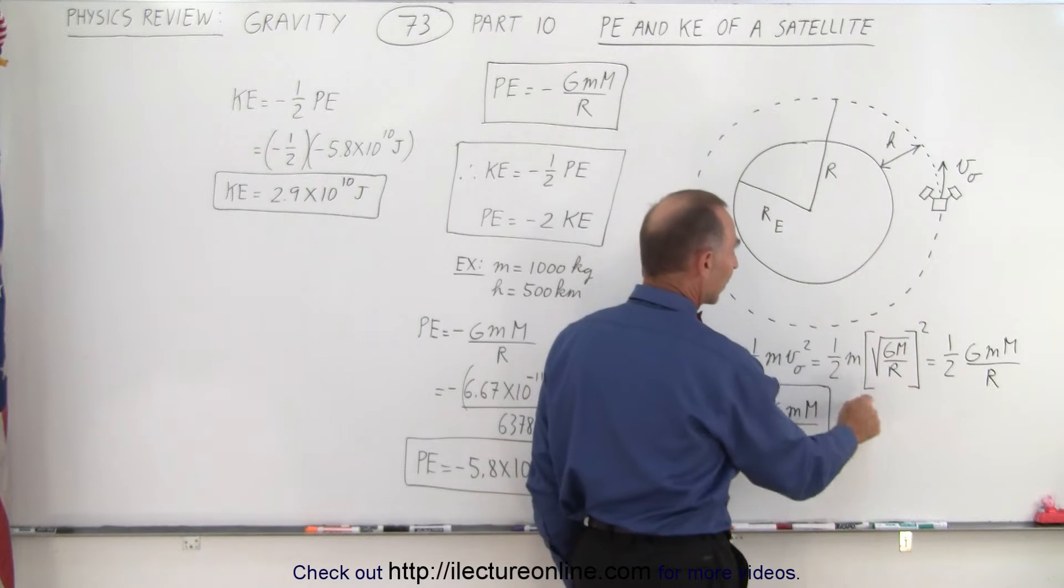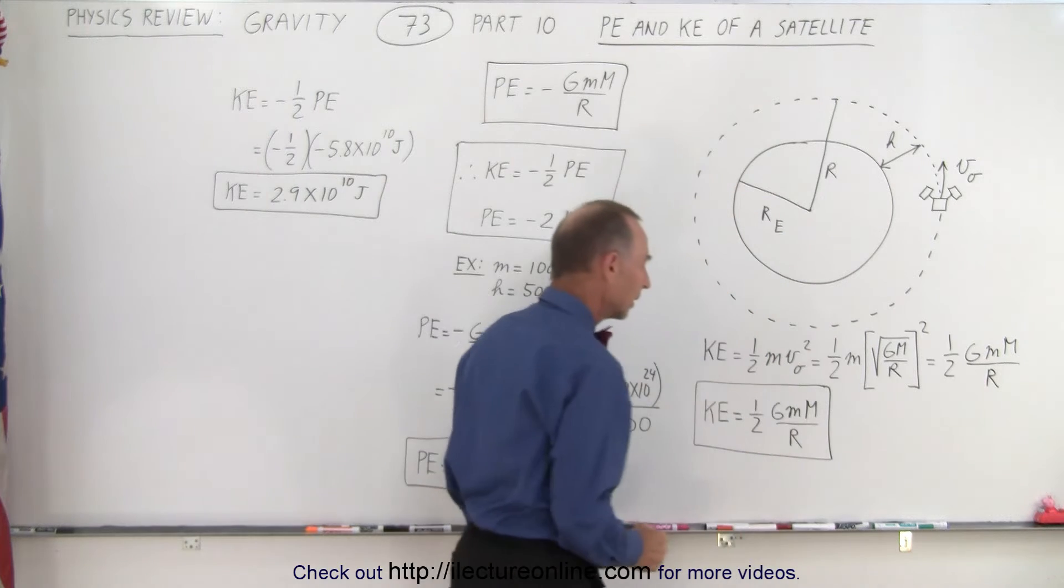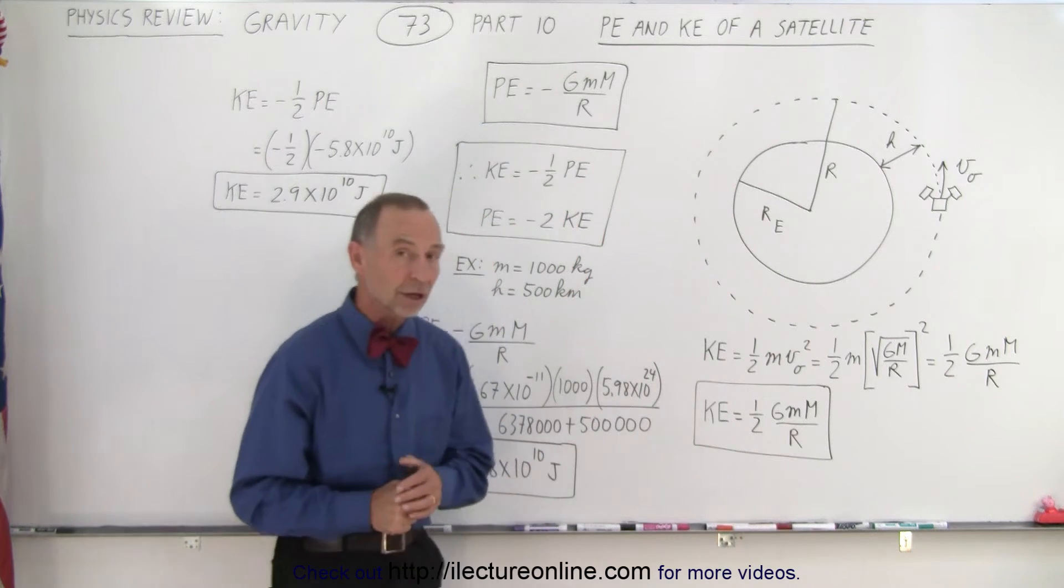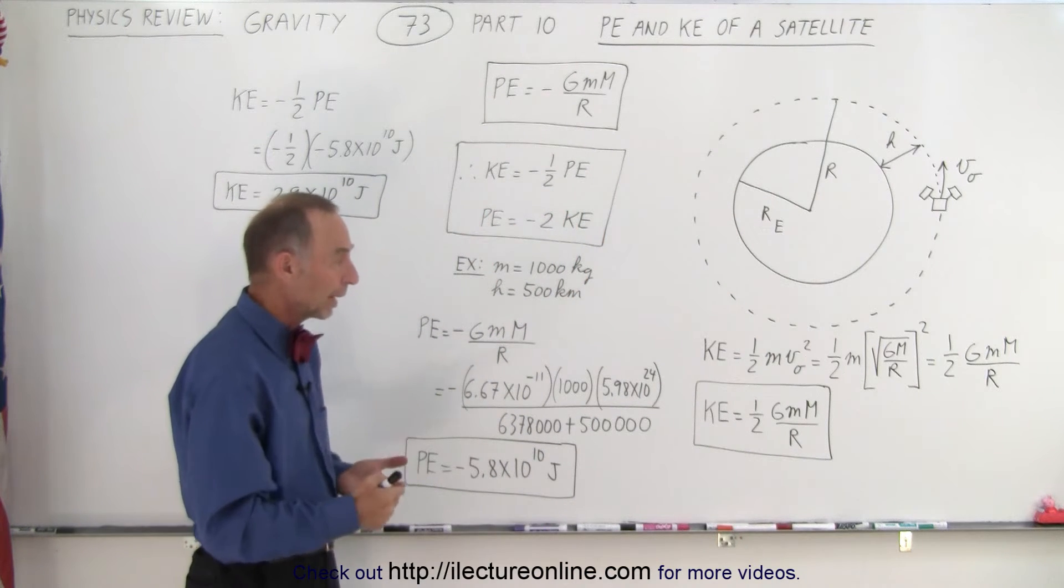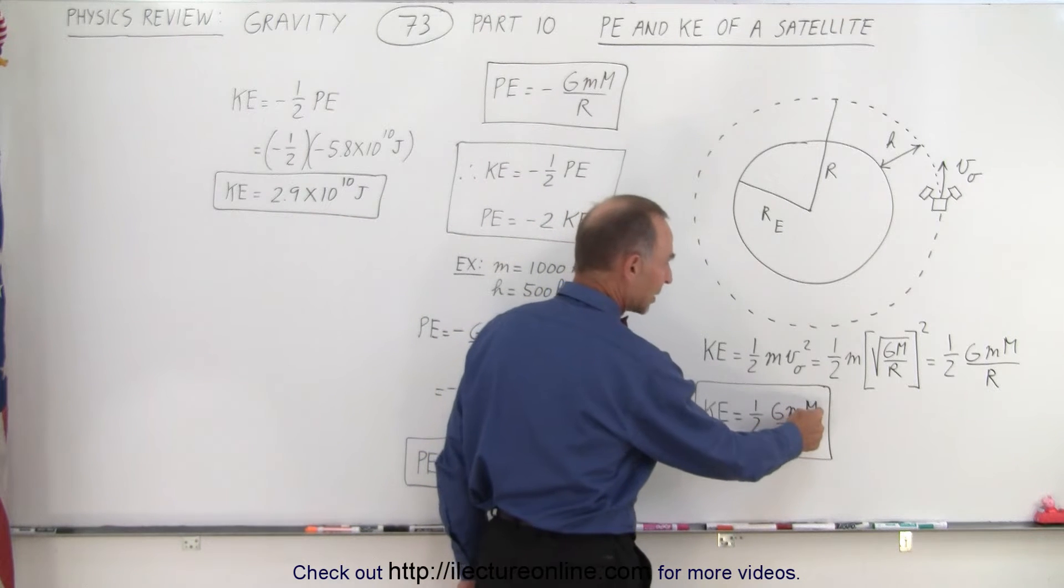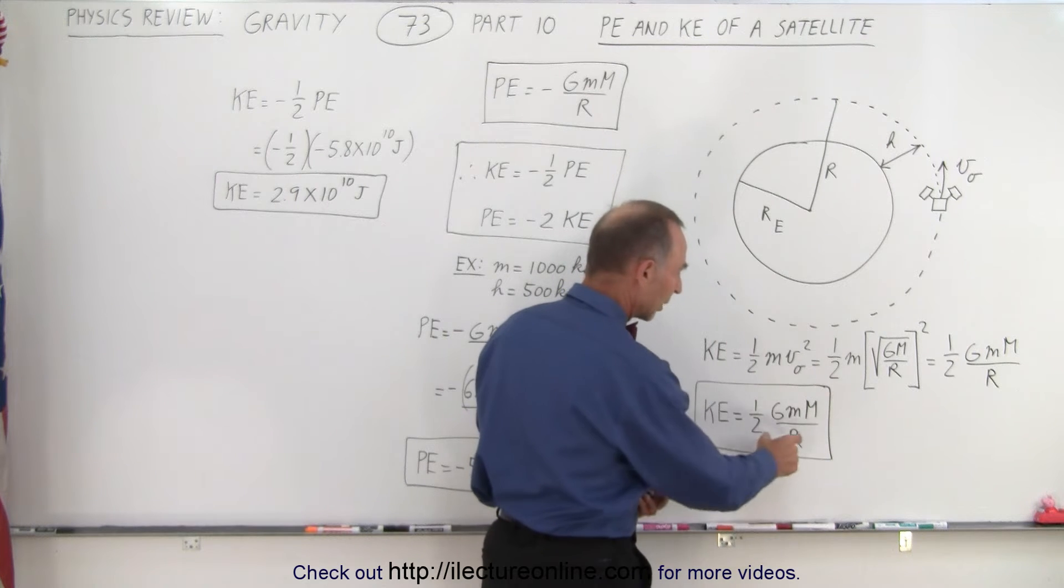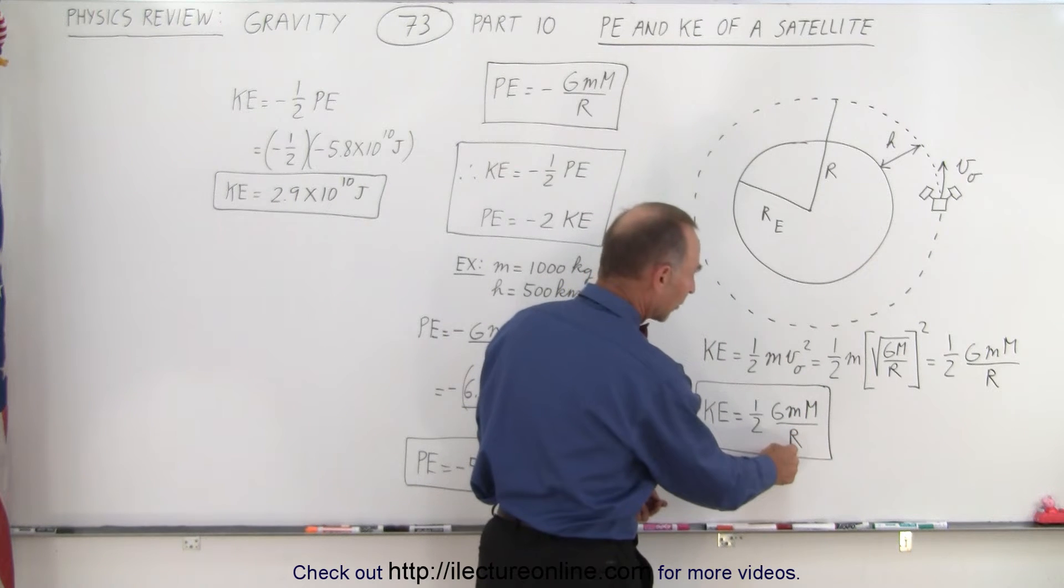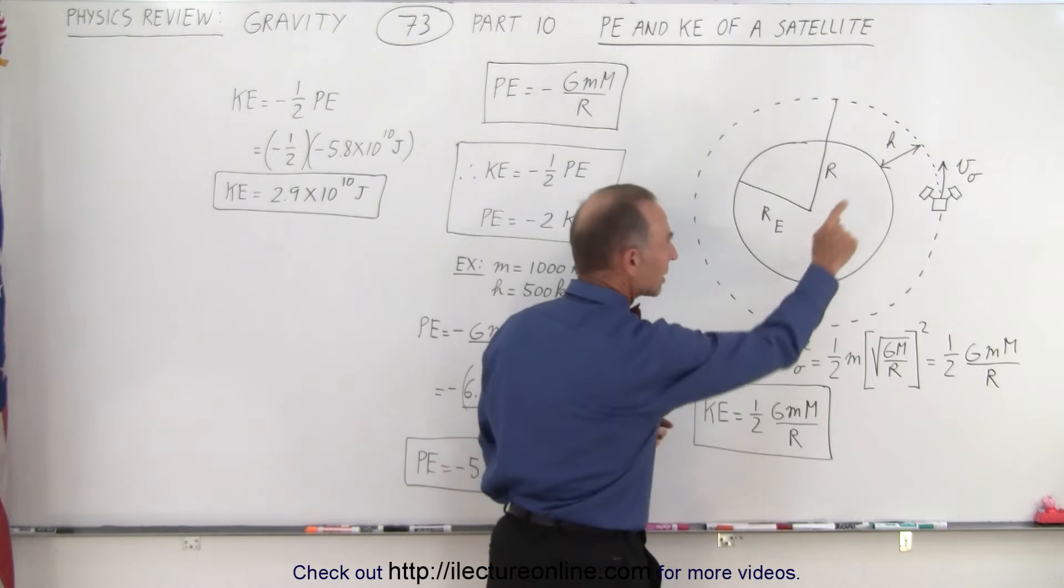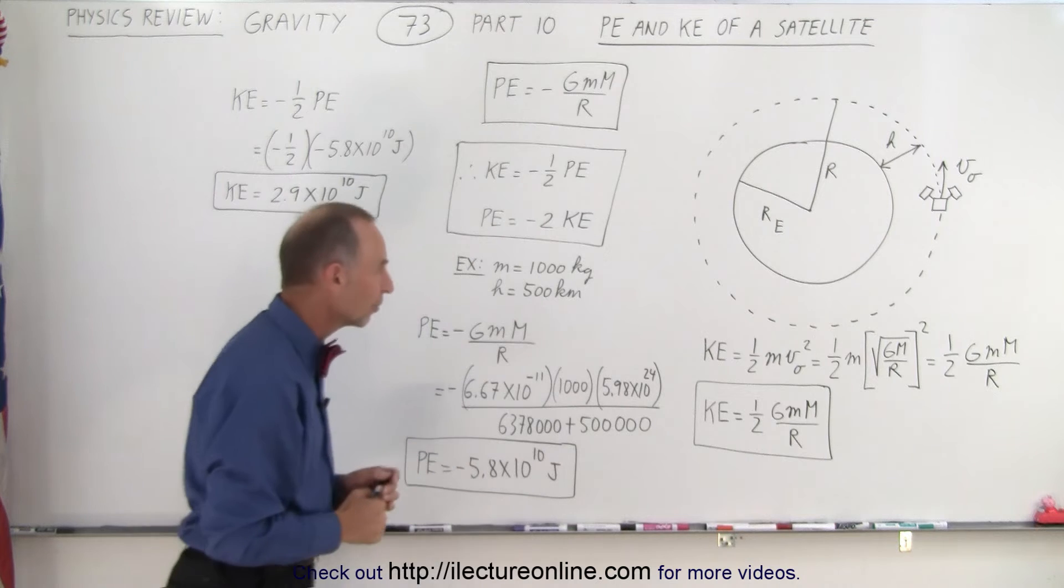And then if we square that we get 1/2 m times gm over r. Now that's going to be the kinetic energy of an object in orbit around another object, little m being the mass of the satellite, big m being the mass of the object that you're in orbit around, r is the radius to the orbit of the satellite, and of course g is the gravitational constant.